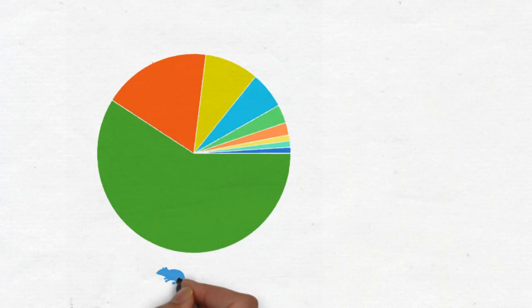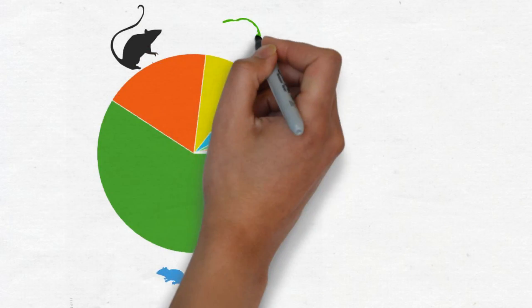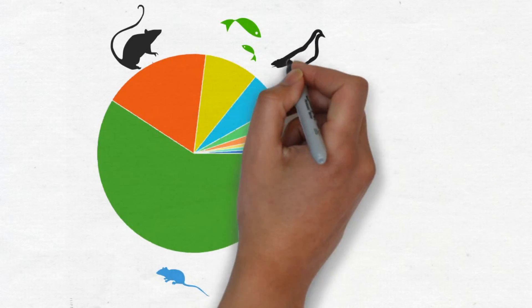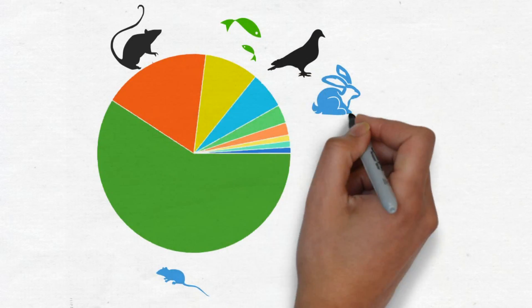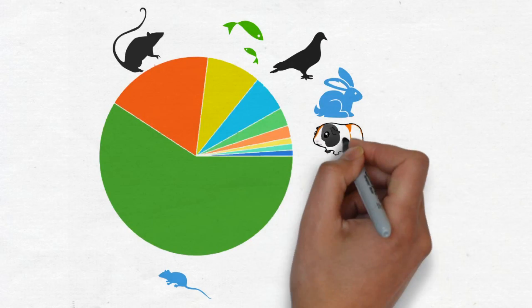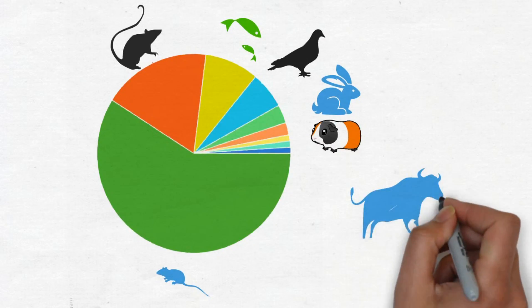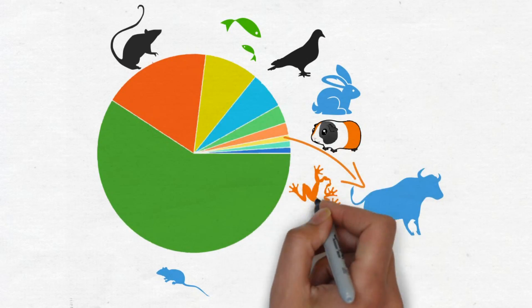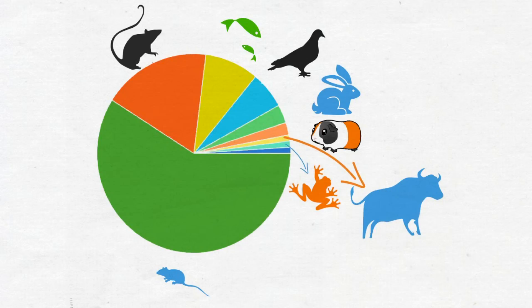Let's look at the percent-wise usage of different species. Mice 59%, rats 18%, fish 9%, birds 6%, rabbits 3%, other rodents 2%, farm animals 1%, reptiles and amphibians 1%, cats and dogs, monkeys and prosimians, less than 1%.